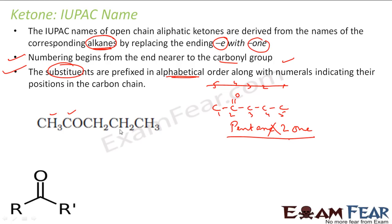In this same compound, if we have a bromine or chlorine substituent, you would say 3-bromo-pentane-2-one or 3-methyl-pentane-2-one. The ordering of substituents follows alphabetical order. We have discussed this a lot in the IUPAC naming chapter, so we won't spend much time on it, but we'll take some exercises to practice.